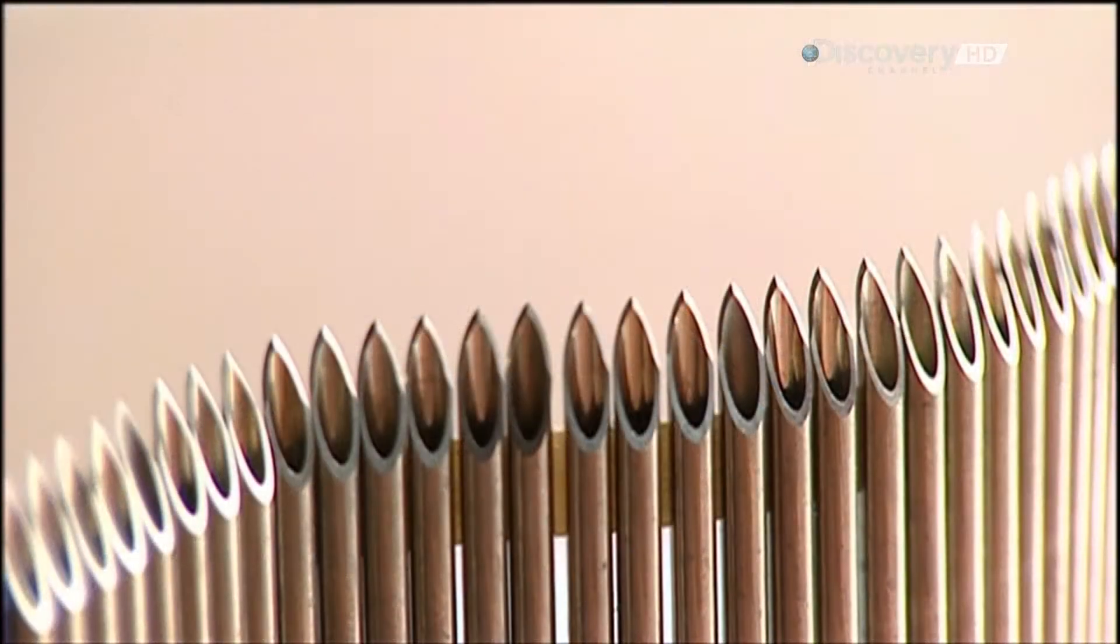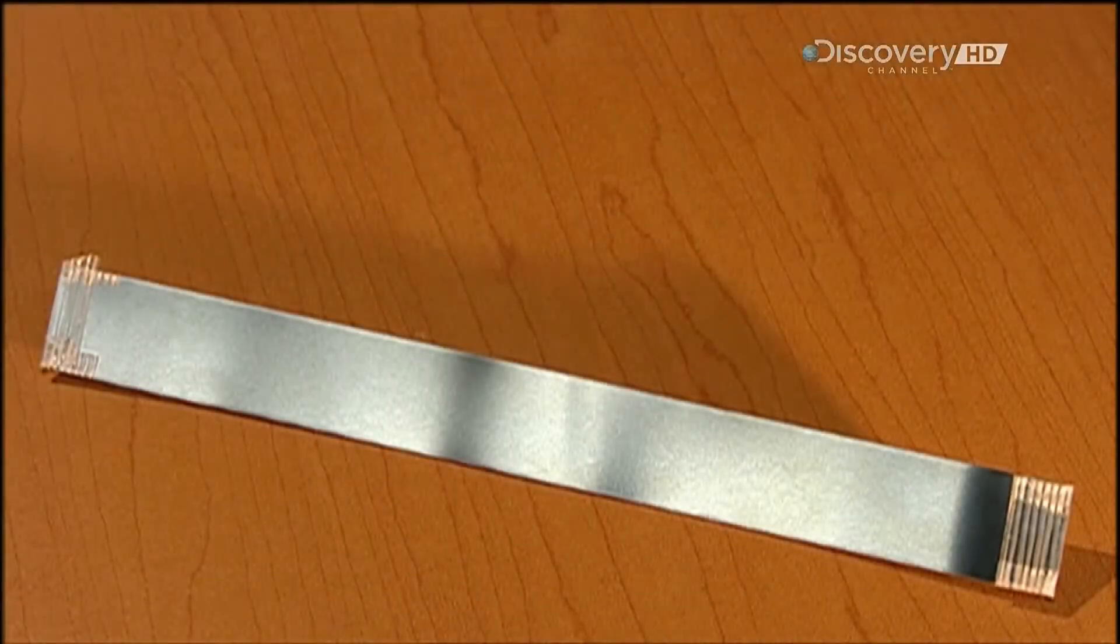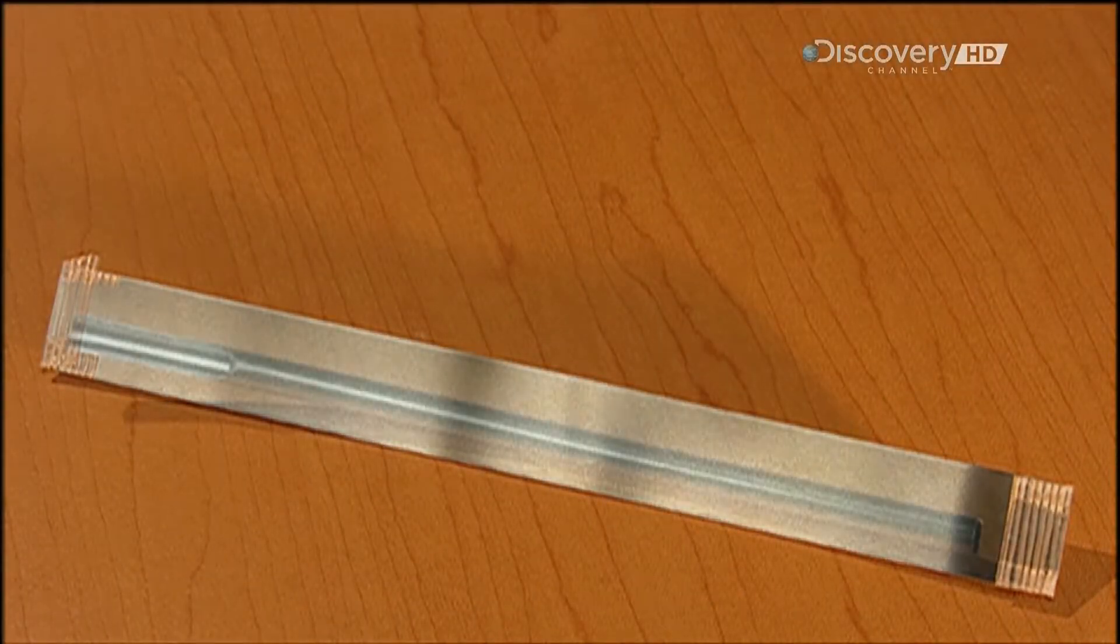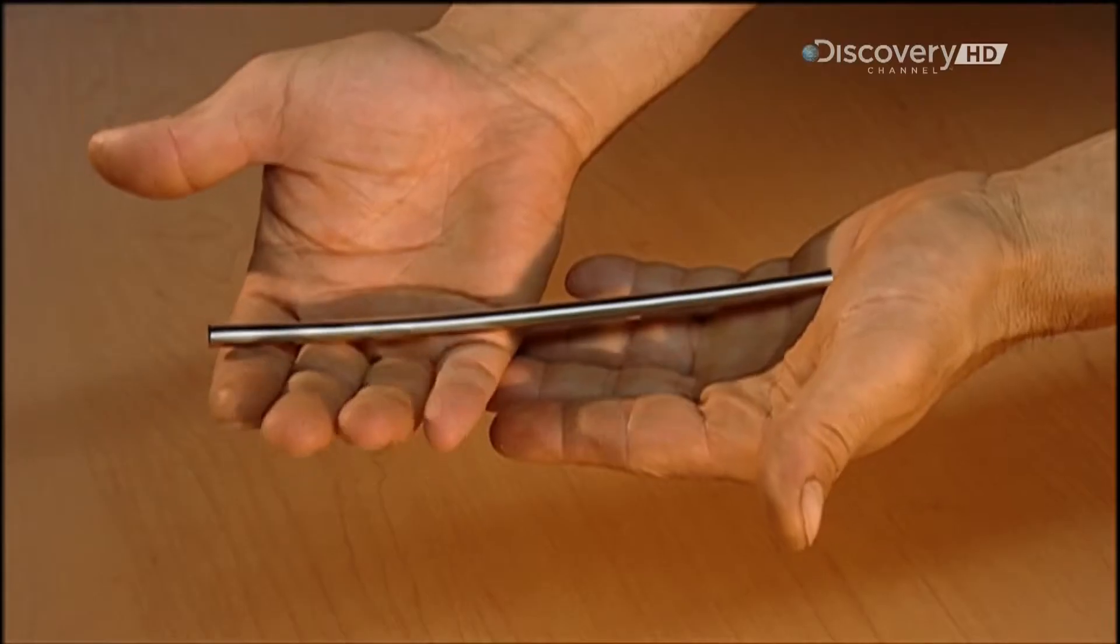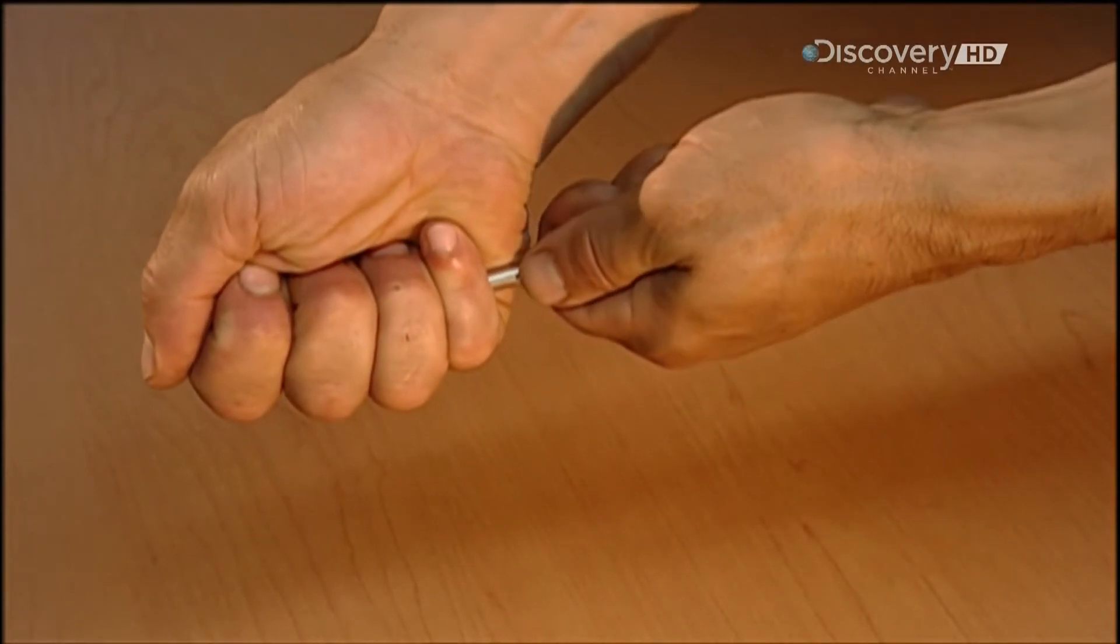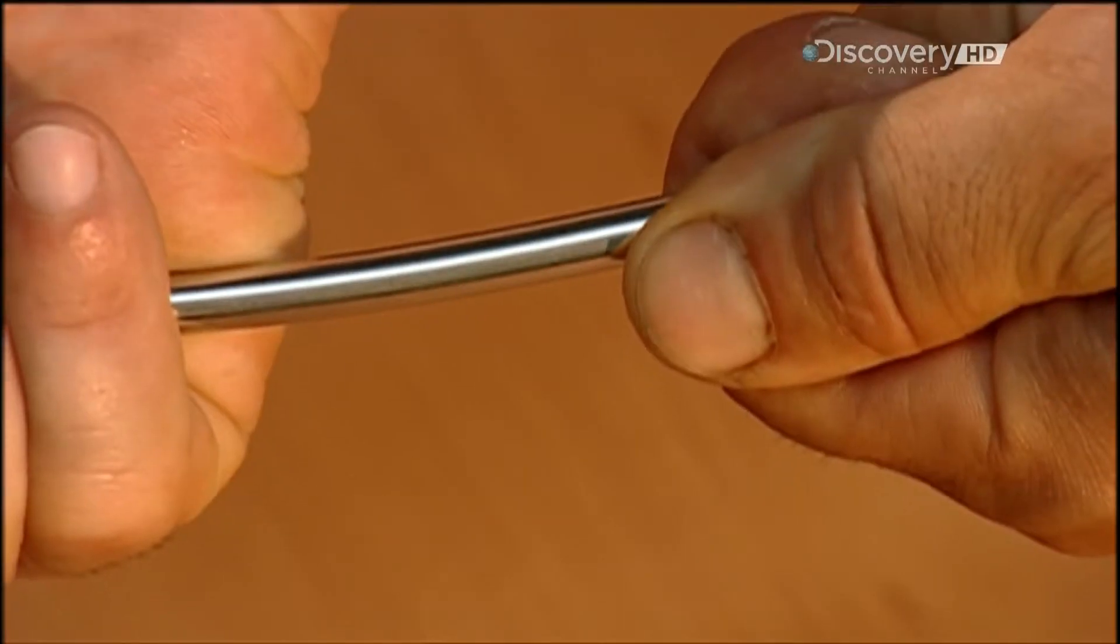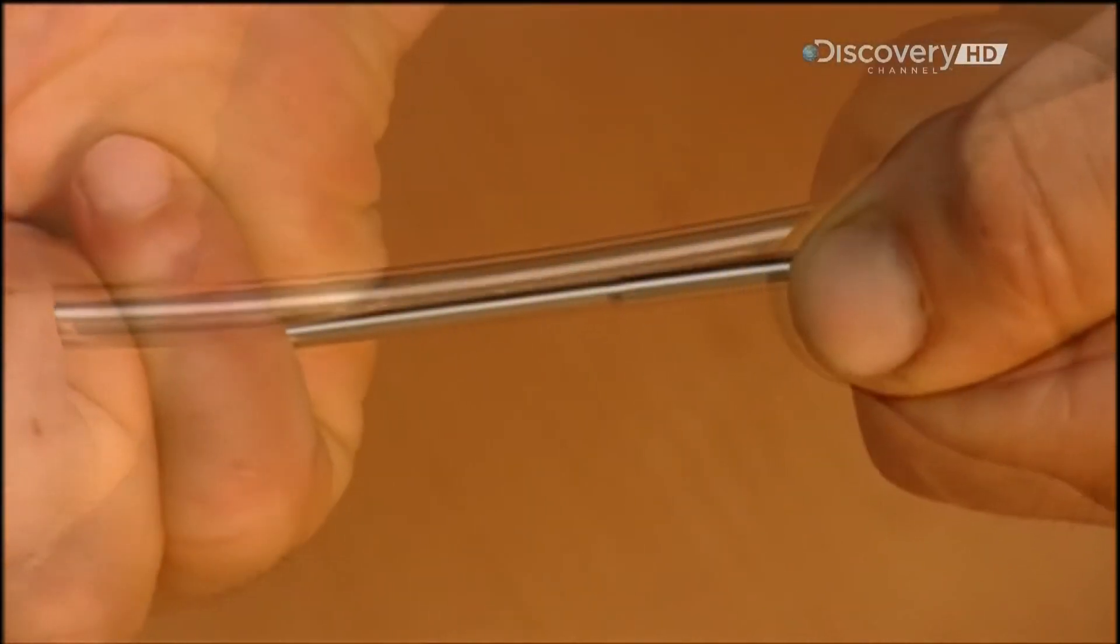A syringe may make you cringe, but the treatment it delivers could be a lifesaver. To make a hypodermic needle, they start with a flat strip of stainless steel. A milling machine rolls it into a tube shape. A laser welds the seam together.